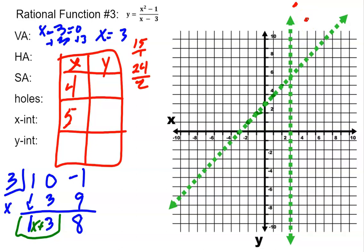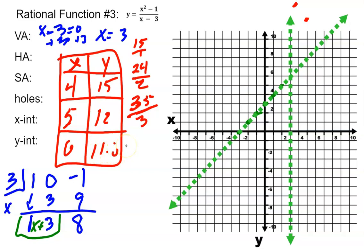If x equals 6: 6 squared is 36, minus 1 is 35, and the denominator is 6 minus 3 equals 3, so 35 divided by 3 gives 11.6 repeating. So the graph is going to come down and then wrap up, following the oblique or slant asymptote.